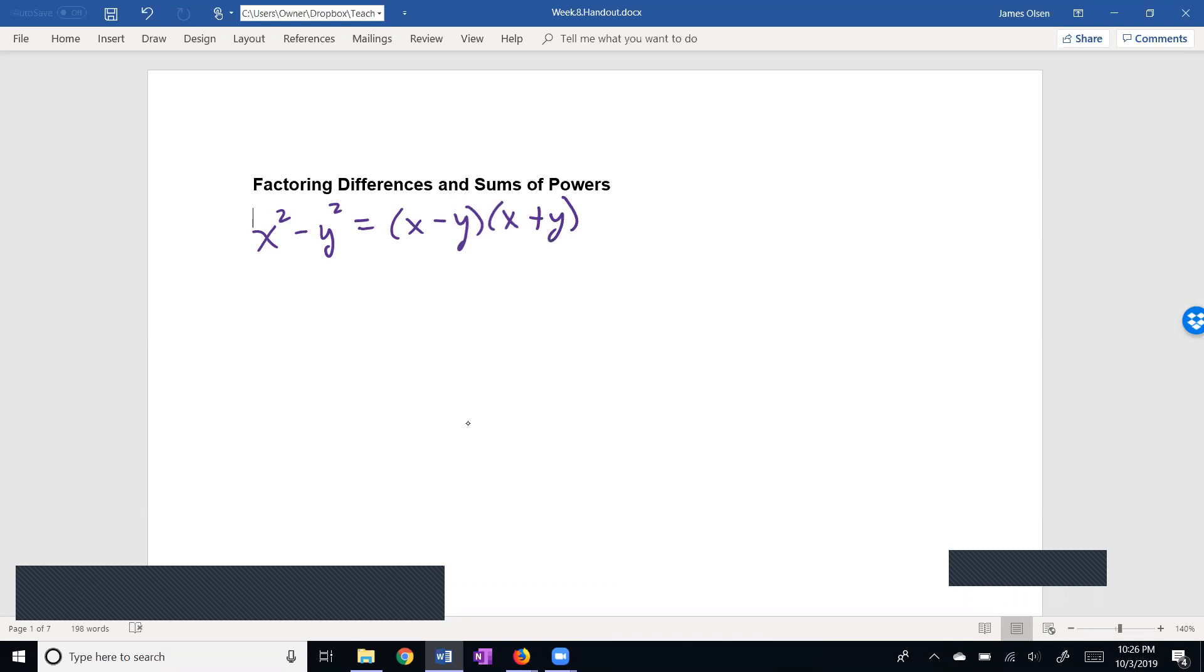Well, we can increase the exponent. So let's say we have x cubed minus 27. This is x cubed minus 3 cubed.